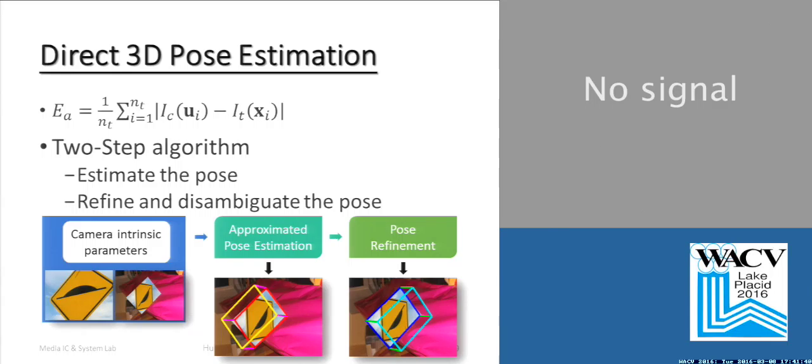It is a two-step algorithm. First, in approximated pose estimation, we estimate the rough pose. Then in the second stage, we refine and further disambiguate the pose.